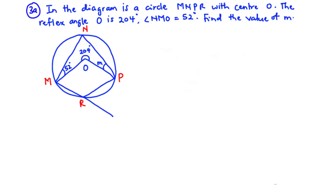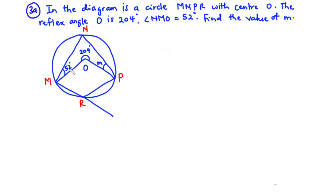Hello students, good day and welcome back to this channel. In today's video we are going to solve WASSCE 2021 Mathematics Paper 2, Question 3. For question 3 we have 3a and 3b. First we focus on question 3a: in the diagram is a circle MNPR with center O, the reflex angle O is 204 degrees, angle NMO is 52 degrees. Find the value of M. This is a problem on circle theorems.